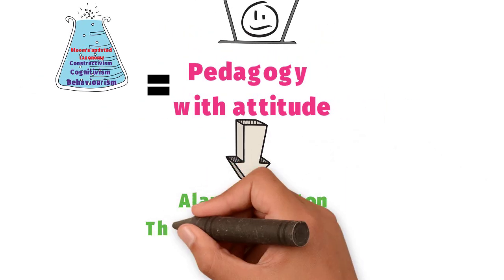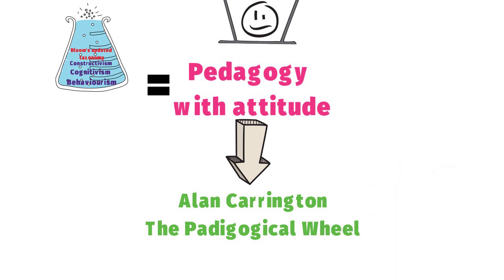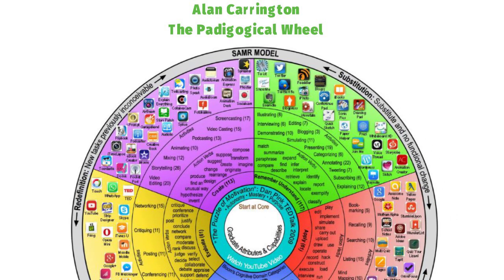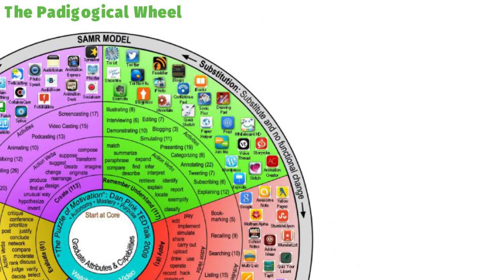Alan Carrington has helpfully provided us with the Pedagogical Wheel. Here he has aligned the taxonomy of learning with corresponding digital tools and apps that can be accessed from an Apple or Android mobile device, laptop or PC. Most are free and easy to use and to share. These are not limited by scale or copyright and have endless possibilities.